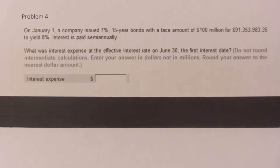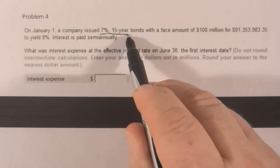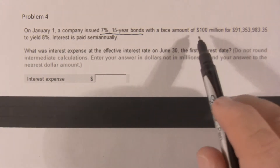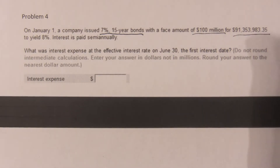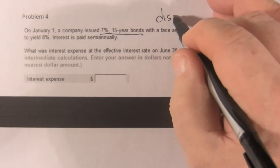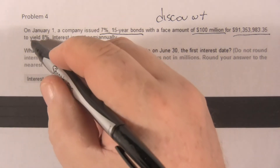This problem is not really a computational problem — it's an interpretational problem. Do you understand the various terms? The bond has a seven percent rate, face amount eighty million dollars, or a hundred million for ninety-one million three fifty-three. First of all, the bond was sold at a discount — if you can buy something worth a hundred million dollars for ninety-one million dollars, that's a discount.